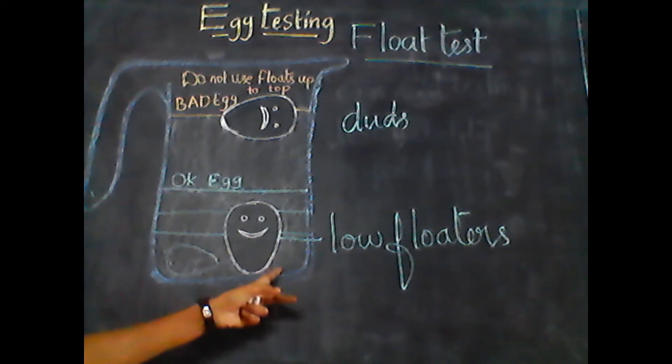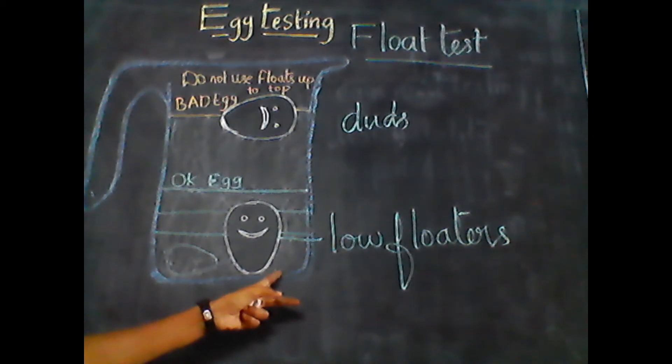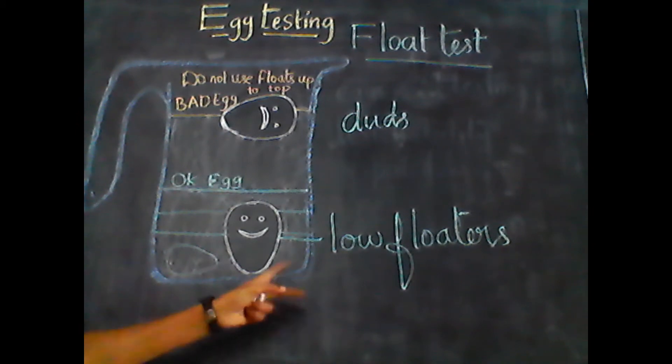Such type of eggs are called low floaters, which are viable and fertile, and should be selected for hatchability.